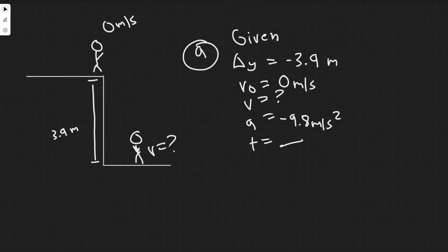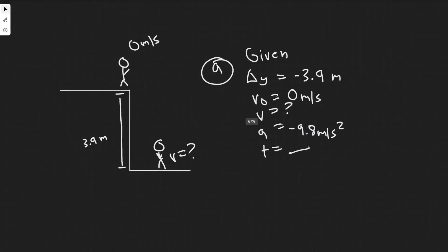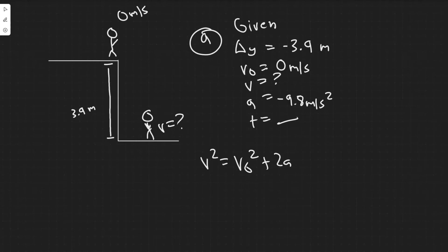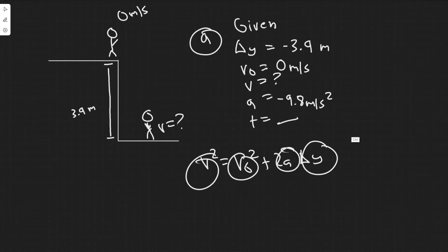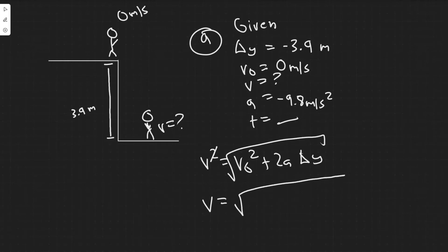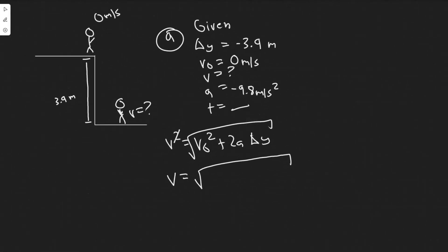Now that I have three known kinematic variables, I can solve for v using one of the kinematic equations. The equation we're going to use is v squared equals v sub zero squared plus 2a times delta y. We use this one because we're solving for v and we have v₀, a, and delta y. To get rid of the square, we take the square root of both sides. So v equals the square root of v₀ squared — which is 0 squared, so just 0 — plus 2 times a, which is minus 9.8, times delta y, which is minus 3.9.